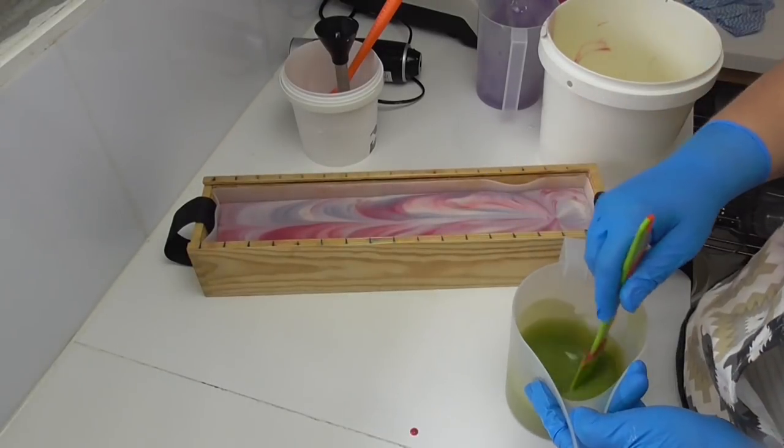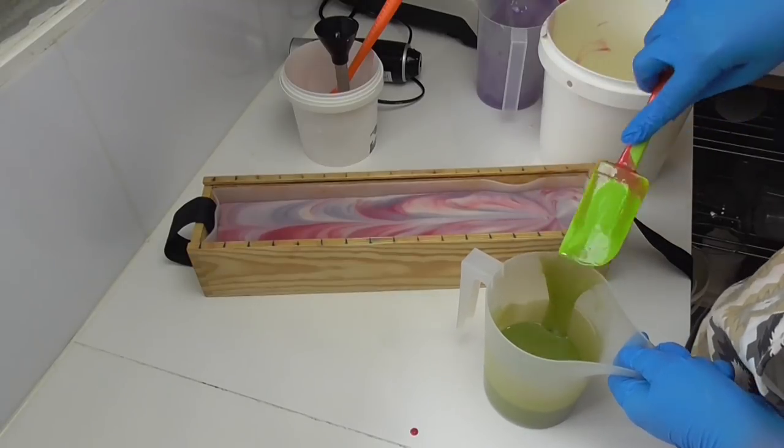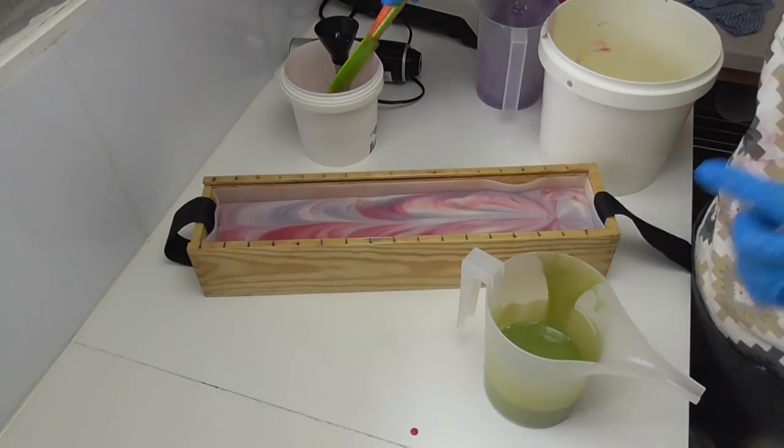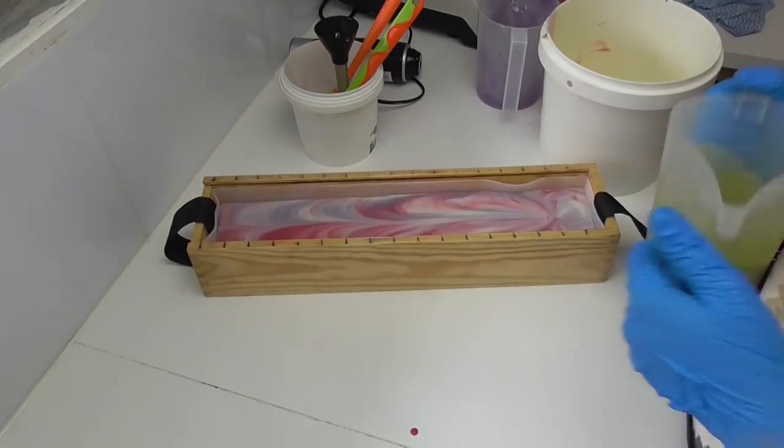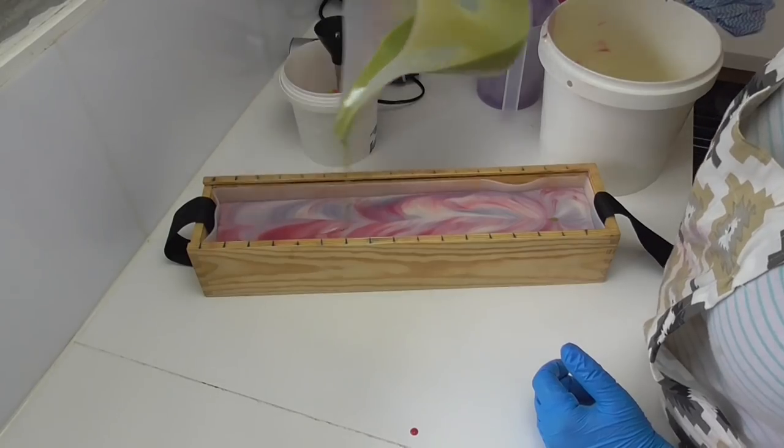I've got a fair bit of white left, so what I'm going to do now is just get my green and drop it through. We're about halfway through and I'm going to keep a little bit of this green so I can do some piping on the top of this soap, and then I'll finish pouring that white in as well.